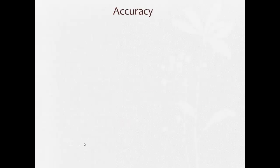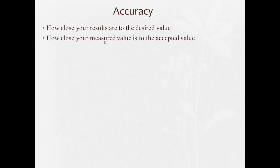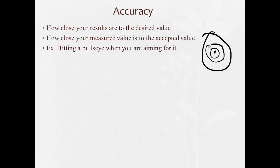So, what is accuracy? Accuracy is defined as how close your results are to the desired value. Basically, how close your measured value is to the accepted value. An example of being accurate is hitting a bullseye when you're aiming for it. So if you have a bullseye and you're trying to hit it with something, the closer you are to the center, the more accurate you are. The further away you get, the less accurate you are.